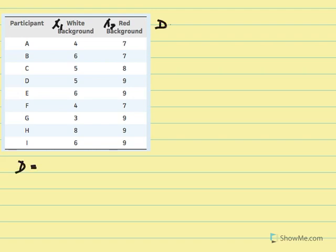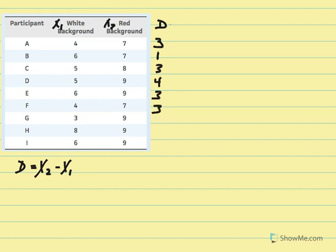Difference scores equal condition 2 X minus condition 1 X. So: 7 minus 4 = 3; 7 minus 6 = 1; 8 minus 5 = 3; 9 minus 5 = 4; 9 minus 6 = 3; 7 minus 4 = 3. We've now calculated the difference between conditions. All are positive numbers, showing they did rate the female as more attractive when presented with a red background.